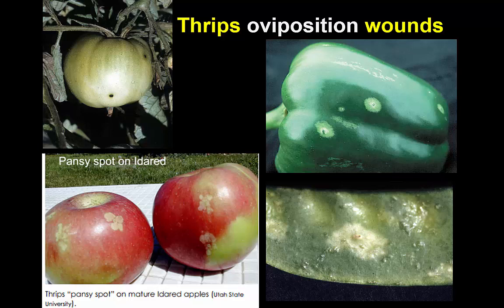An oviposition wound, particularly on fruit, if an egg has been laid during an early stage, will develop a little cloudy area. In this case it's not from the feeding but from the process of egg laying. So these are oviposition wounds on a tomato — the little dark spots — on a pepper the little light spots, on some apples on the lower left, and on a peapod. The peapod and to a lesser extent the apples and peppers will often have a kind of a cloudy area around the injured site. This is sometimes called a pansy spot or halo spot, and in the center of that symptom is where the egg had originally been inserted.